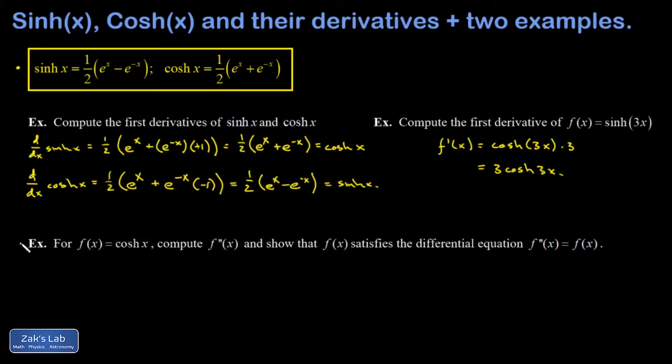The third example might introduce a concept you've never seen before. I'm talking about a differential equation here. But in my opinion, the earlier, the better. So I'm saying for f of x equals cosh x, compute the second derivative and then show that this function f of x satisfies this equation.